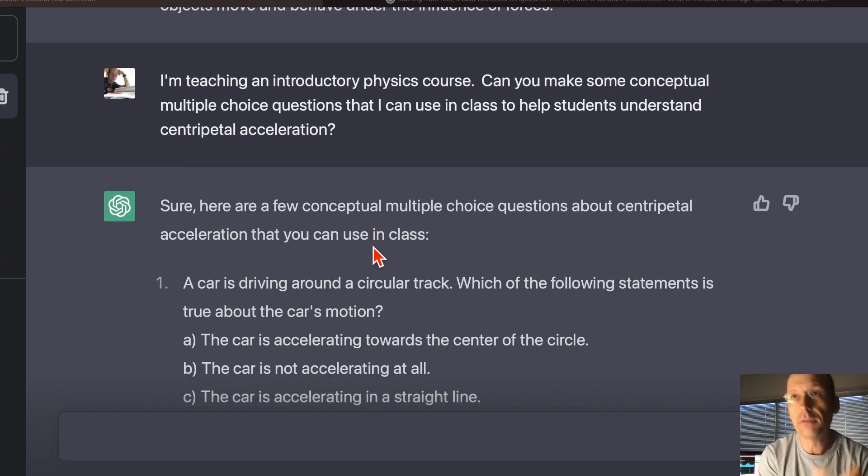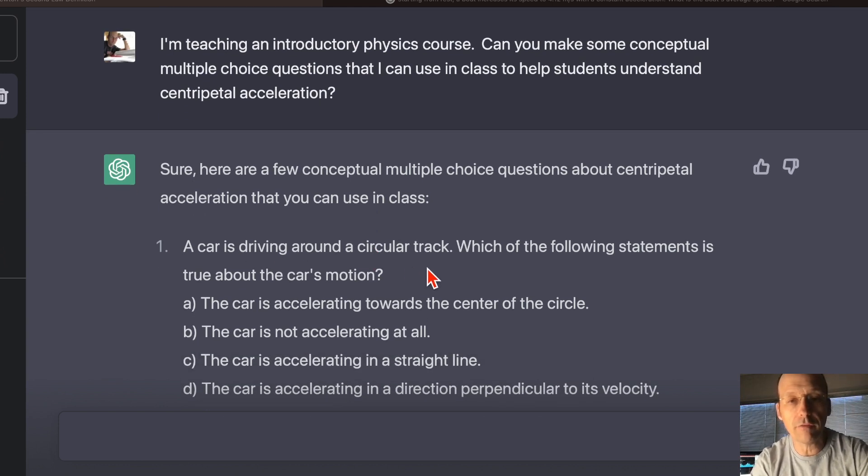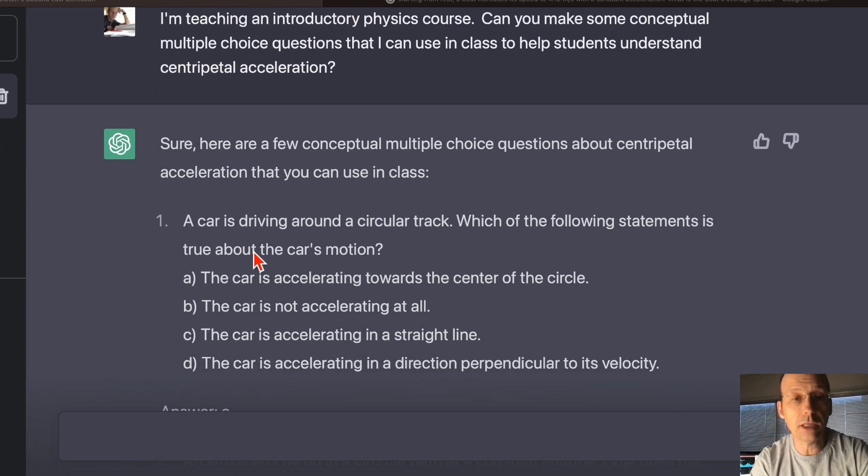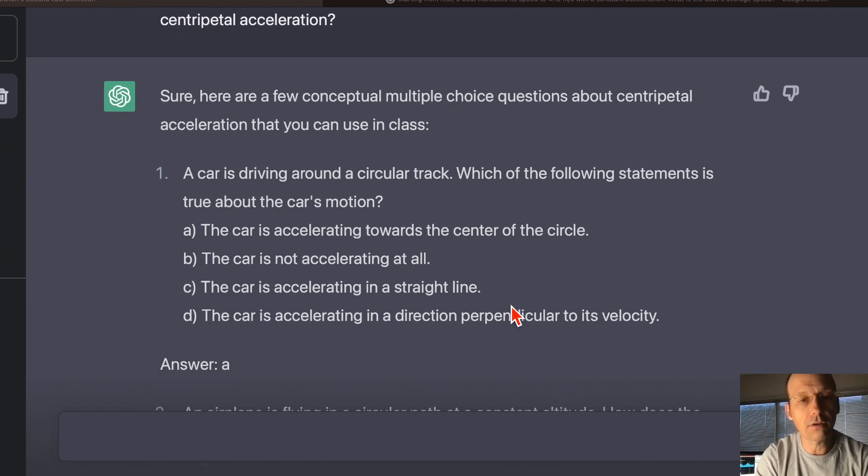It's always polite. Sure, I can do that for you. And I never polite did, and that's rude. And I have to respect our robot overlords, right? Okay, so here are a few conceptual questions. One, a car is driving around a circular track. Which of the following statements is true about the car's motion? At a constant speed. The car is accelerating towards the center of the circle. That is true. The car is not accelerating in order. That cannot be true.